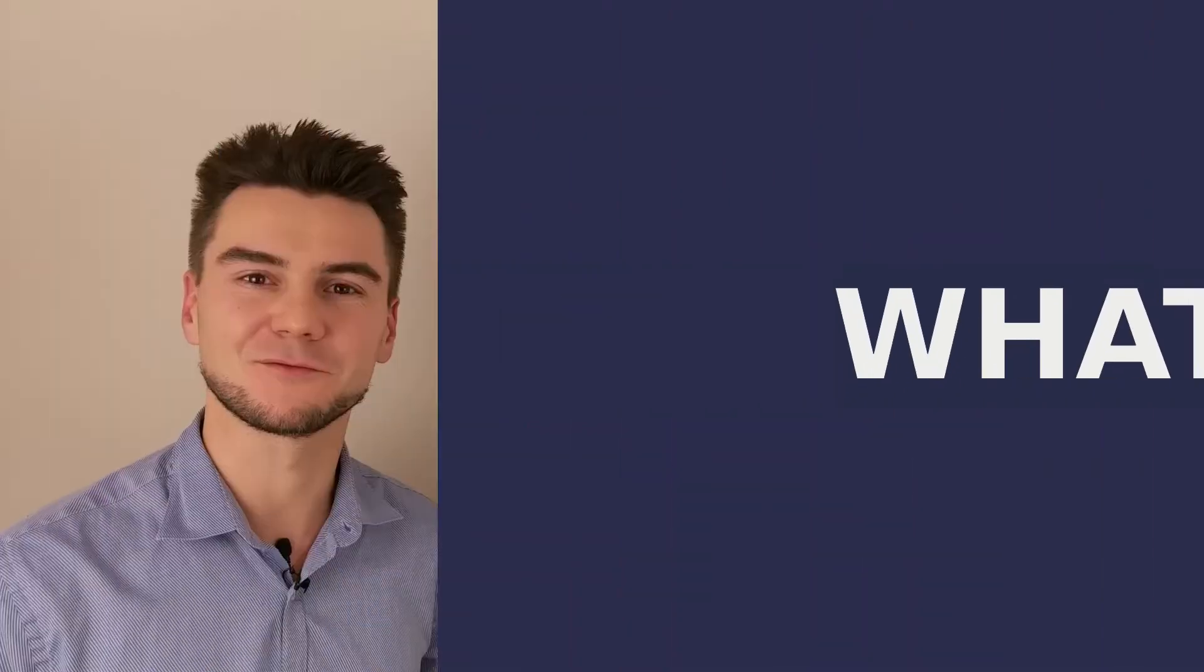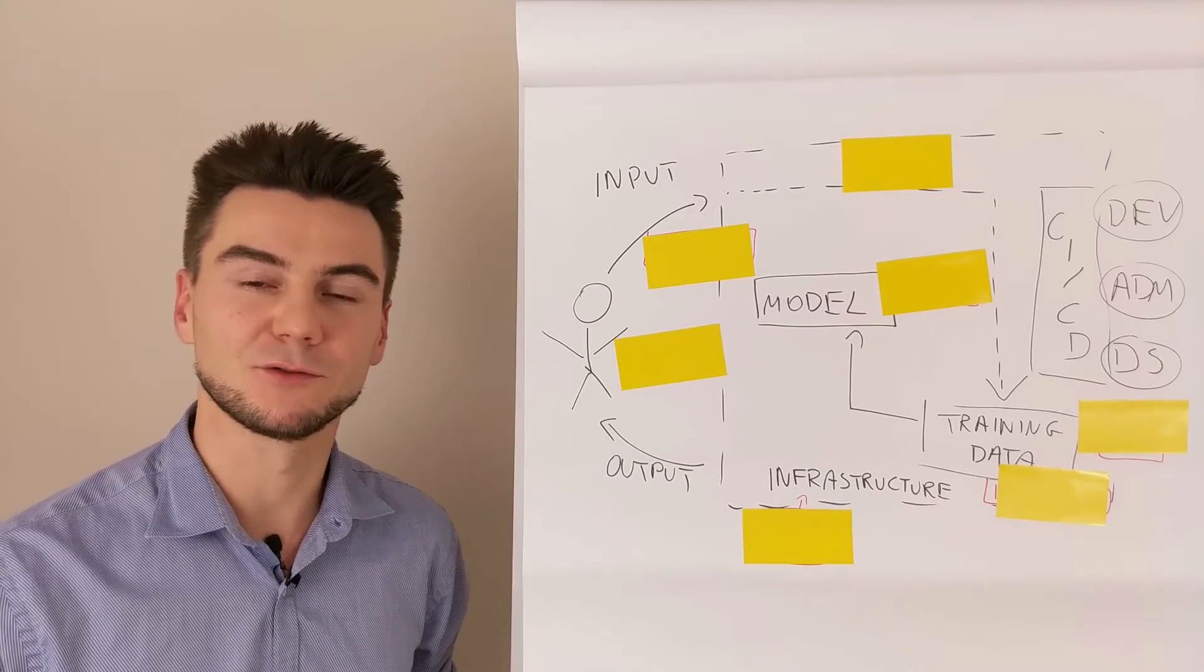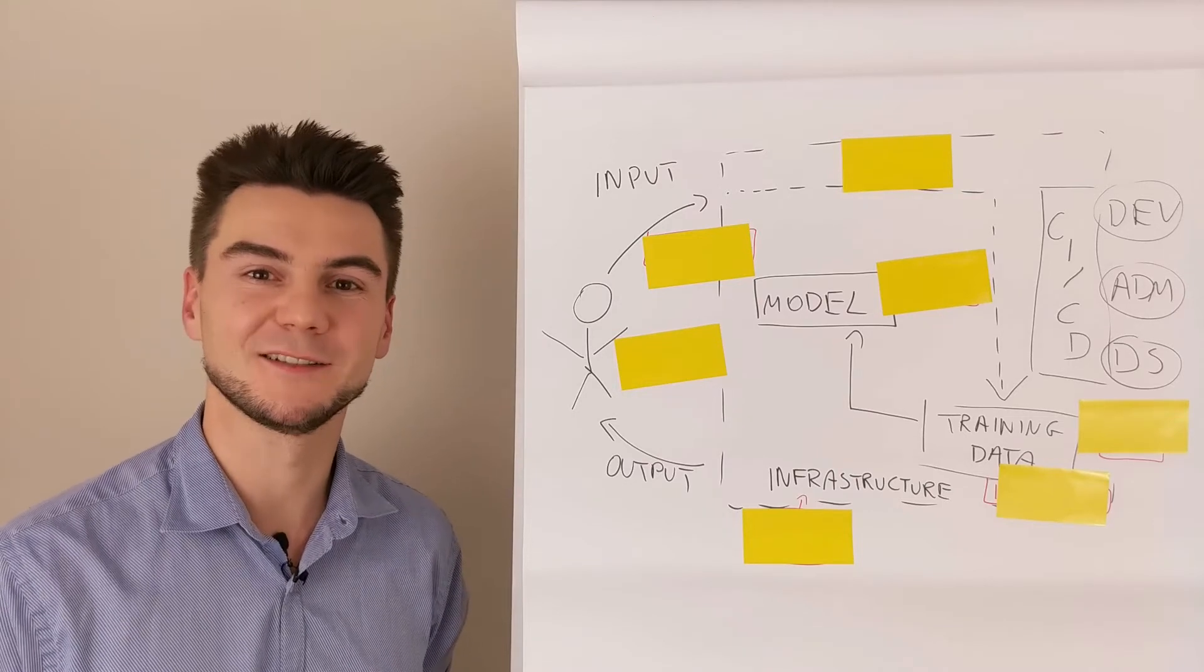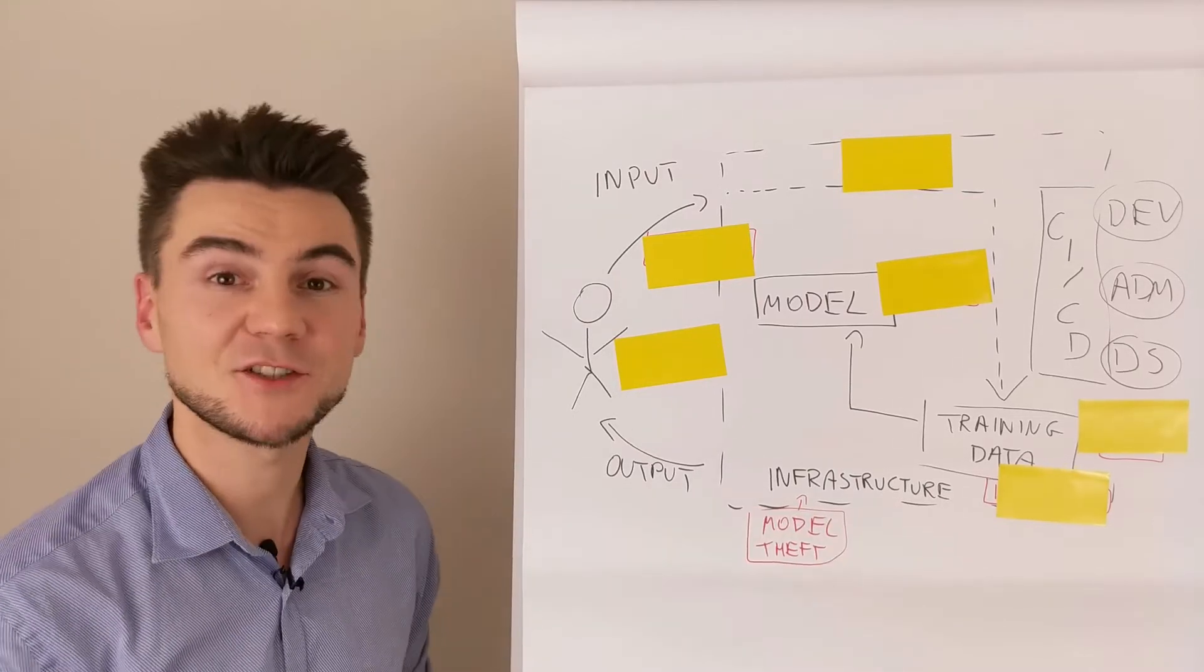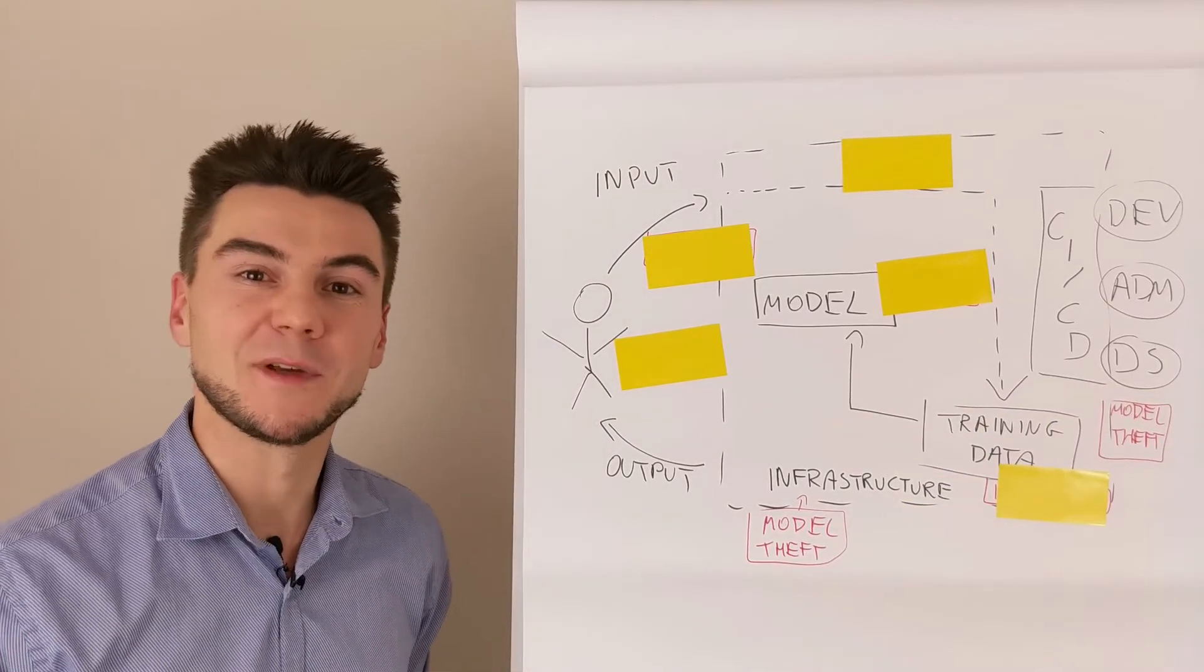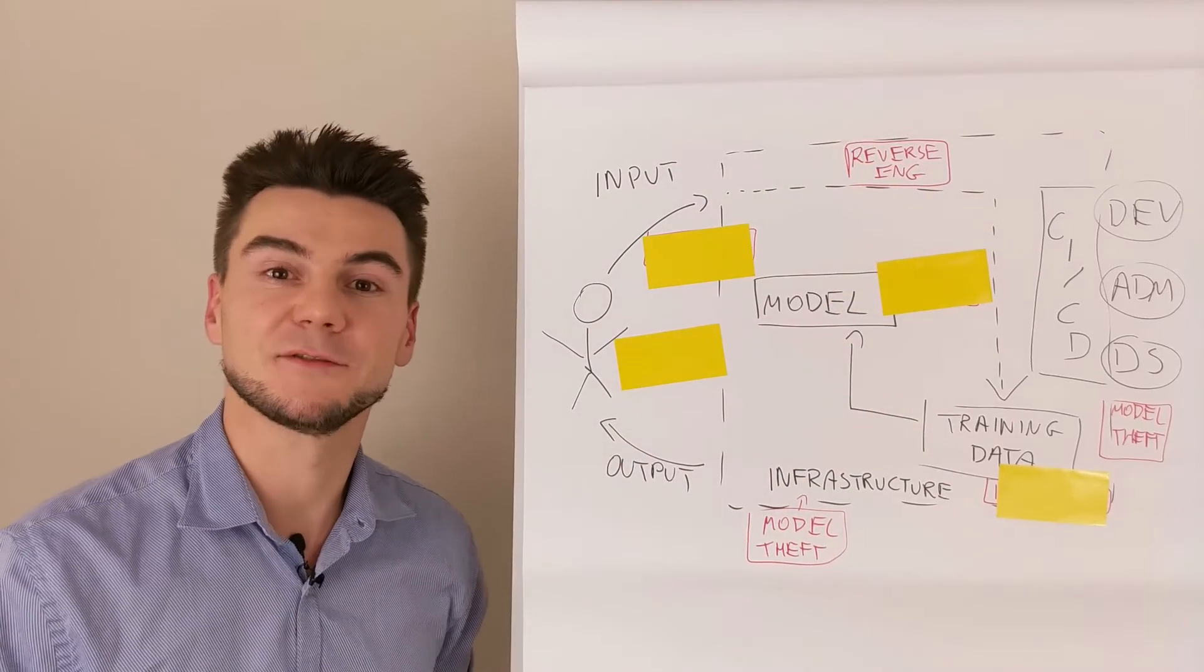What can go wrong? If the user wants to take advantage of the system, knowing the model or at least the training data helps a lot. That's why they want to steal the model via infrastructure attacks, third-party compromise, just by reading the documentation, or by disassembling the device in case of IoT.